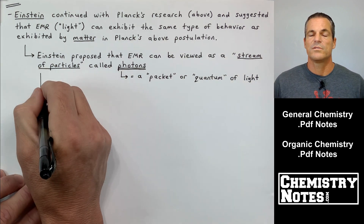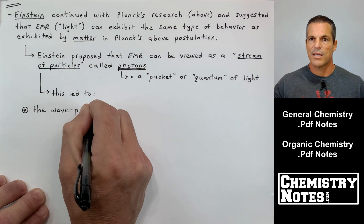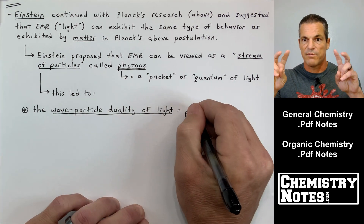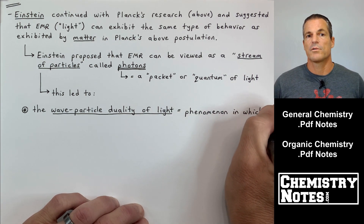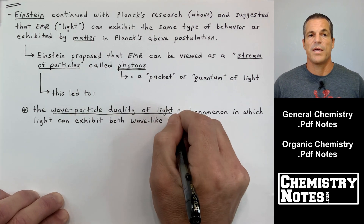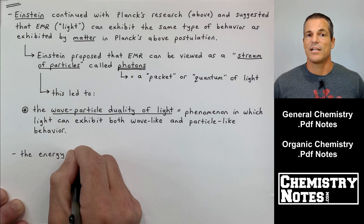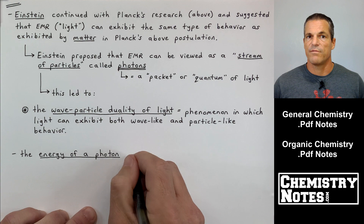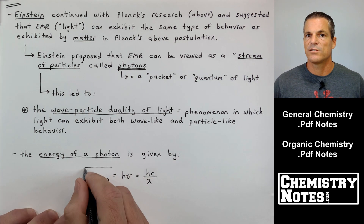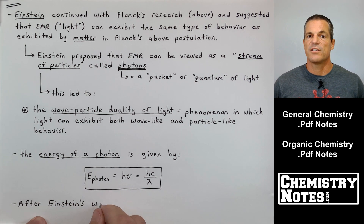Einstein proposed that EMR can be viewed as a stream of particles called photons — a stream that moves in a linear, one-way directional movement. Light, which travels as a wave, can also be viewed as a stream of particles called photons. Photons are just a packet or quantum of light. This led to the wave-particle duality of light — the phenomenon in which light can exhibit both wave-like and particle-like behavior. The energy of a photon equals hν, which also equals hc/λ, where h and c are both constants.